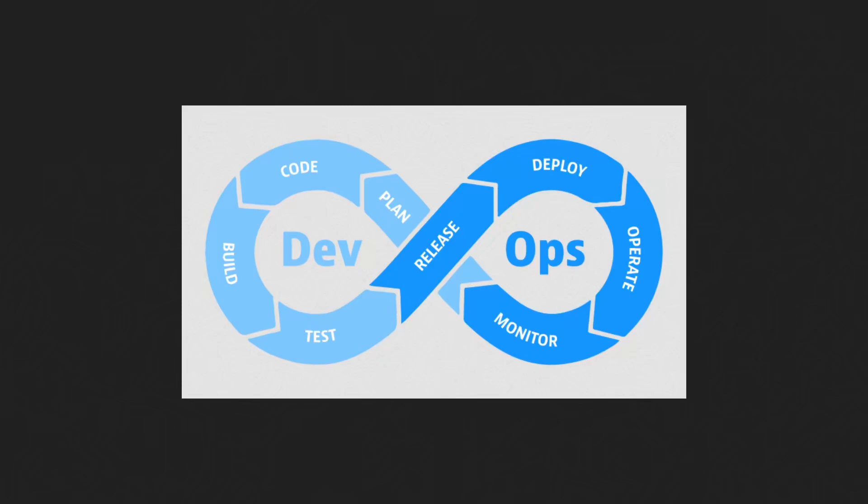For example, you have a customer base for an application or product you're building and they might ask for a particular feature. If you don't have a DevOps setup in place, it might take a long time — you need to do a lot of manual testing, planning, building, and monitoring. But if you do it in an automated way, it will just save a lot of time.